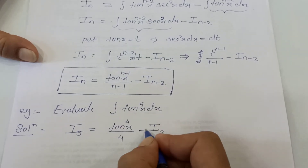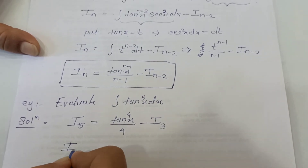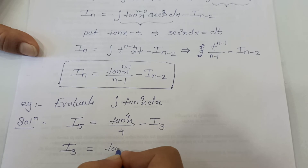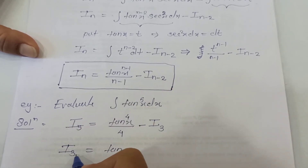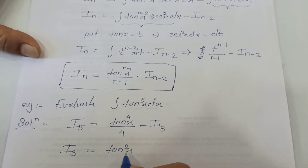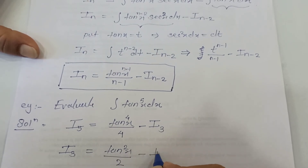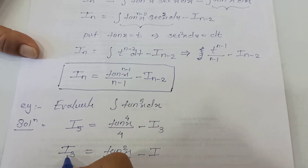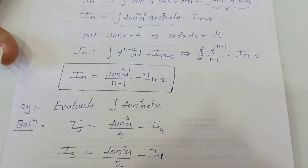Since n is 5, n minus 2 is 3, so we get minus I_3. Now we evaluate I_3 using the same formula. I_3 equals tan raised to n minus 1 — here n is 3, so 3 minus 1 is 2 — giving tan squared x upon 2, minus I_{n-2}. With n equal to 3 we get minus I_1.